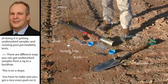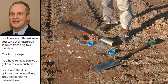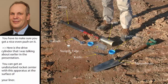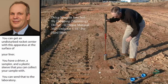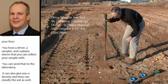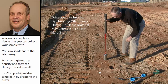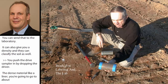Here's that drive cylinder apparatus. You can get an undisturbed sample at the surface of your liner using a driver and a sampler — there's a plastic sleeve inside that you collect your sample in, take it out, and send to the laboratory. They can give you a density and also classify the soil index properties. You push the drive sample in by dropping a driver. In dense material like a liner, you're going to advance about 1/16th of an inch per hard blow, so quite a few blows are needed. Here's the sample ready for lab testing.